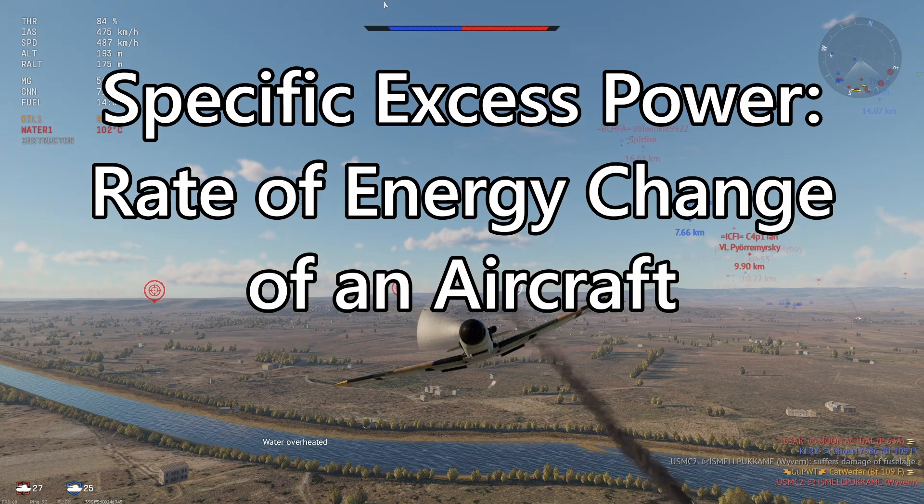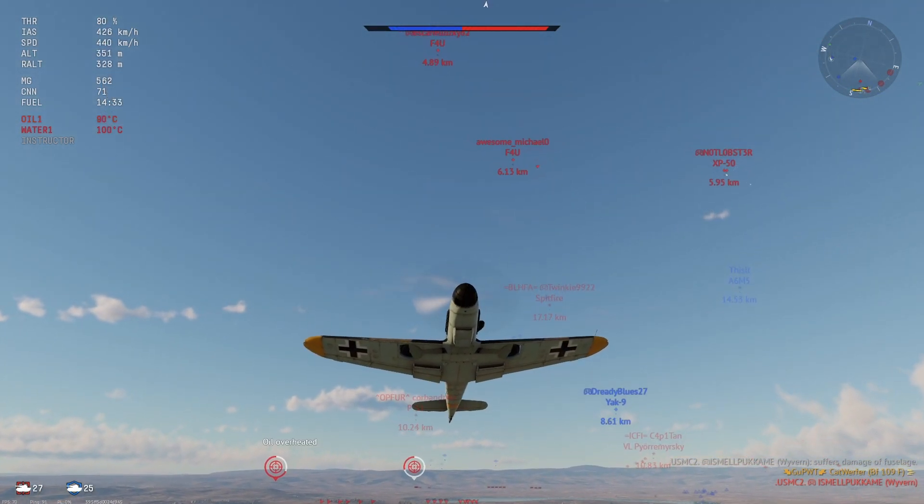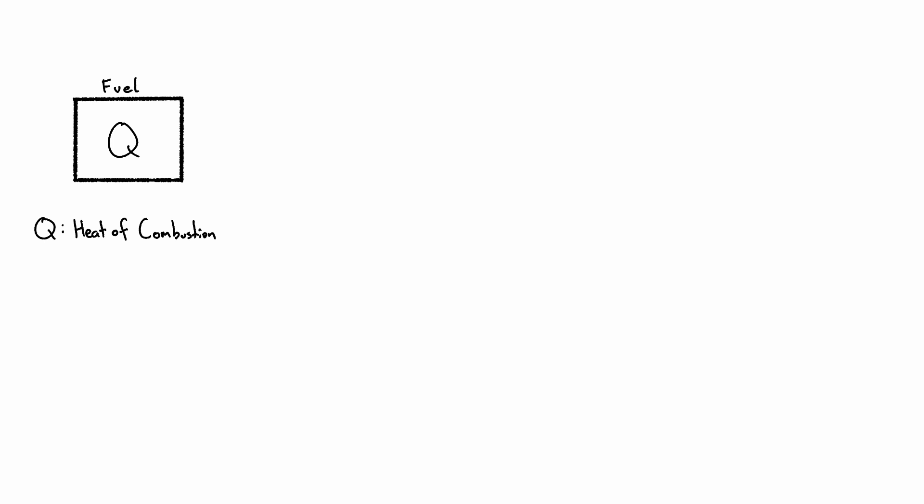Basically, it's the rate at which your aircraft's energy changes over time. We can get a better picture of what specific excess power means when we look at the energy flow diagram of an aircraft.